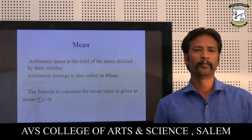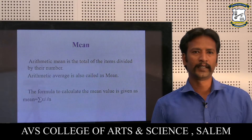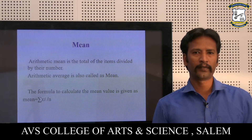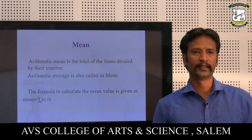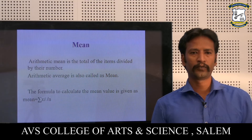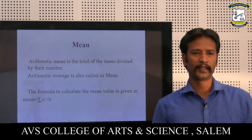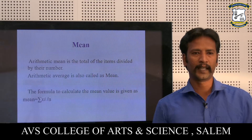The first one: mean. The arithmetic mean is the total of the items divided by their number. The arithmetic average is also called the mean. The formula to calculate the mean is: mean = ΣXi / N.